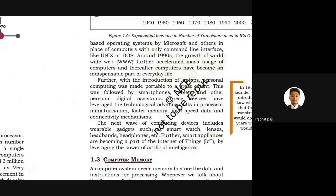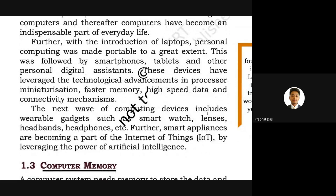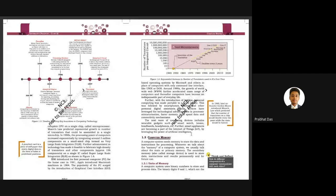The next wave of computation involves wearable gadgets like smart watches, smart lenses, and headbands. The future appliances becoming part of our day-to-day life fall under the Internet of Things, where each and every device communicates with each other through IP addresses — your fans, chairs, dustbins, water taps, and electrical systems all connected to the internet and controllable from a single device, probably your smartphone. We have almost entered this wave and are about to go deeper into it.